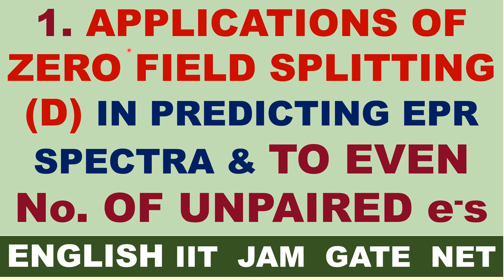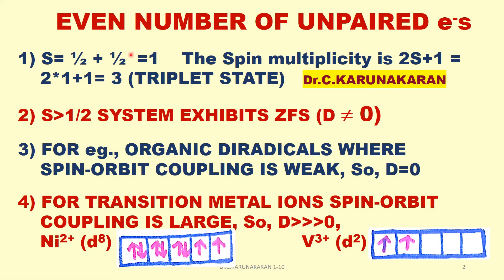Let us study today the applications of zero field splitting in predicting the number of ESR lines, especially for even number of unpaired electron systems. We have already studied zero field splitting and Kramers degeneracy in the previous video lesson. Let us now apply zero field splitting to even number of unpaired electron systems.